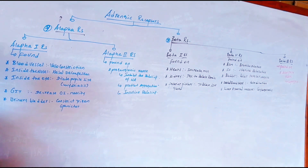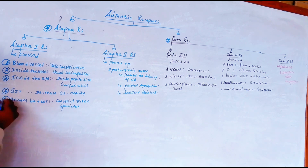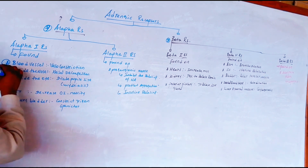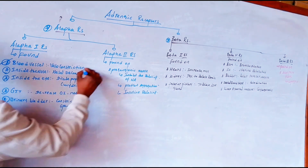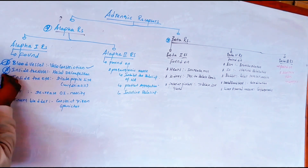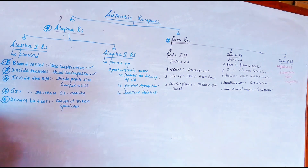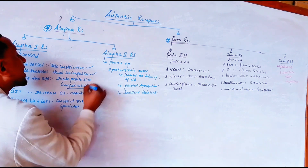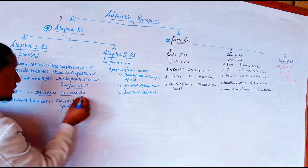Where is the location of Alpha 1 receptor? Alpha 1 receptor is found on the blood vessels, and their effect is vasoconstriction of the blood vessels. The second location of Alpha 1 is inside the nose — nasal decongestion. Alpha 1 is also found inside the eye, where it dilates the pupil size.